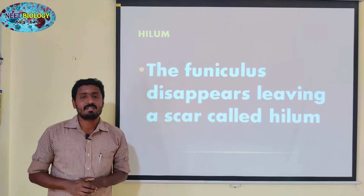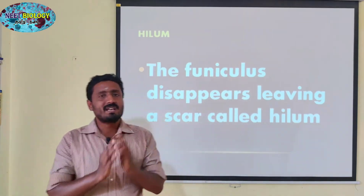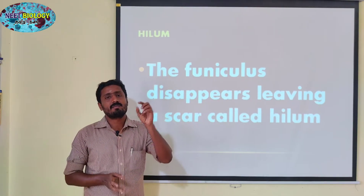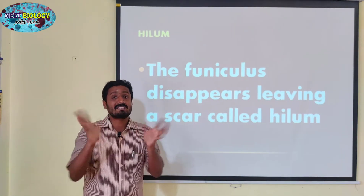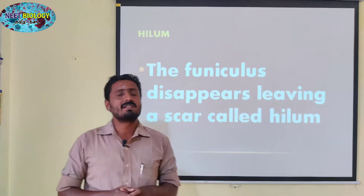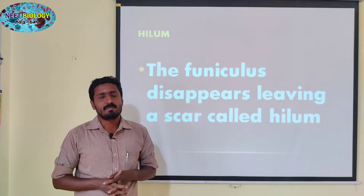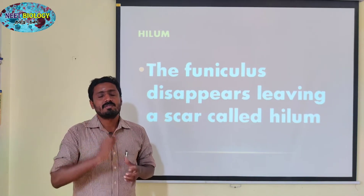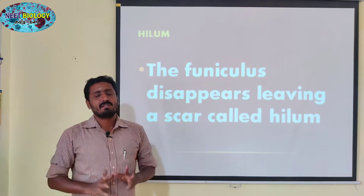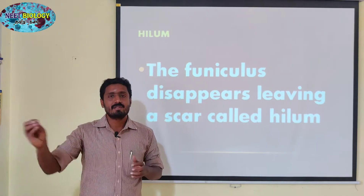This scar is called the hilum. The seeds will be detached from the fruit wall. The fruit wall will be attached to it. This is the Vithai's camp — the seed's attachment point — which is a place where the scar is visible.